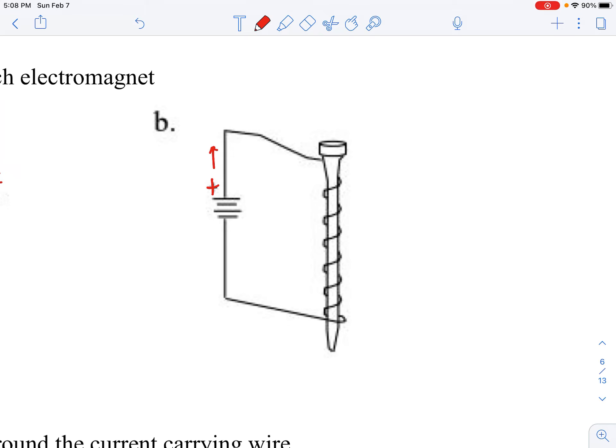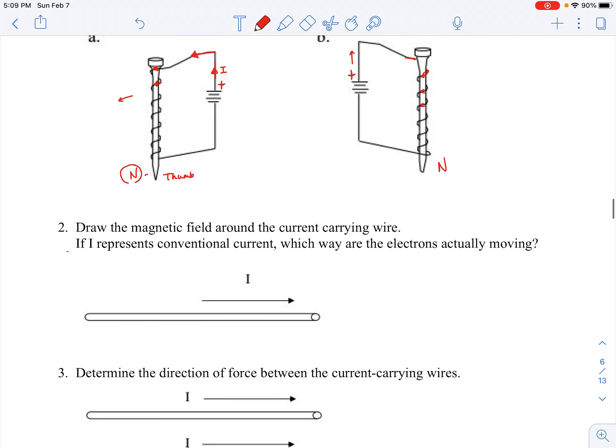Let's try another one. Again, I'm going to use conventional current — positive charge flow coming out of the positive terminal of the battery. I can see that current coming around, and once again I use my hand to determine that the thumb points to the north end of the electromagnet.